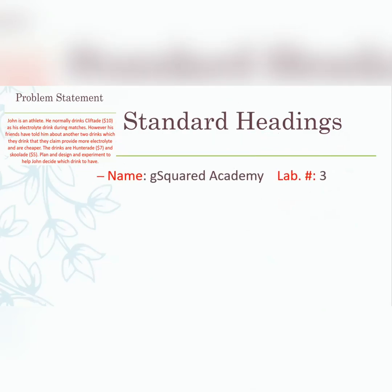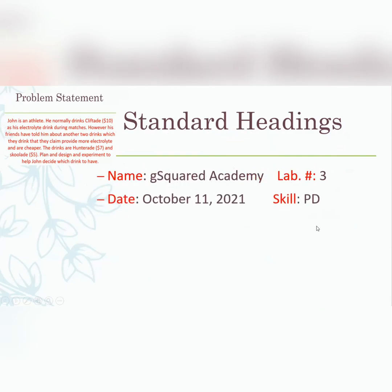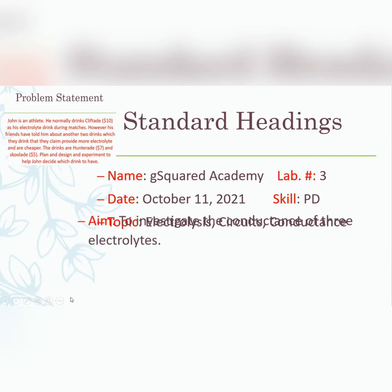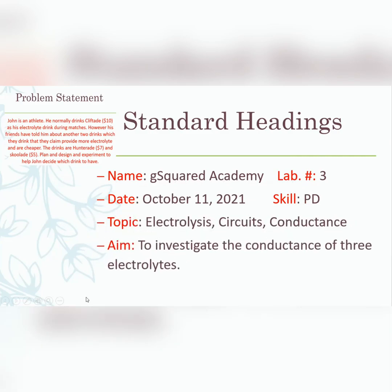You have your standard headings: G Squared Academy, Lab Number Three, October 11, 2021, skill is PD. The topic could be electrolysis, circuits, conductance, or anything else suitable. Our aim is to investigate the conductance of three electrolytes.